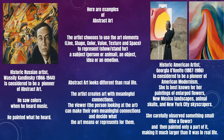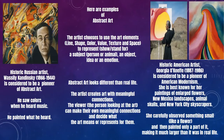Here you see two famous artists. The artist on the left is historic Russian artist Wassily Kandinsky. He lived from 1866 to 1944, and he's considered to be a pioneer of abstract art — meaning he was one of the first people to make art this way. He saw colors when he heard music, and he painted what he heard. On the right you see historic American artist Georgia O'Keeffe. She lived from 1887 to 1986 and is considered a pioneer of American modernism.